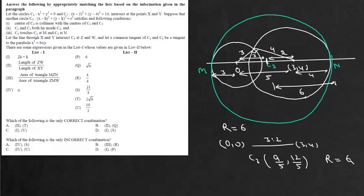Now it says a line through XY intersect C3 at Z and W and let the common tangent of C1 and C3 be a tangent to parabola x squared equals 8 alpha y. Now it also says these two circles they intersect at capital X and capital Y. So this is your X and this point it is your Y.